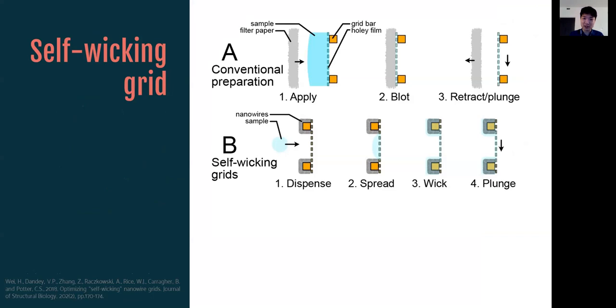So going back to the self-wicking grid. So the idea for a conventional grid, which I presented earlier, is that you have a filter paper. You press it against the excess liquid and it blots it away. And when you retract and plunge, you are left with a very thin film of liquid. For the self-wicking grids, what actually happens is that you can actually grow nanowires on the grid bars themselves, such that the grid has an innate capacity to absorb some liquid. So when you apply a sample onto the grid, this liquid is now sucked away by these nanowires and you get a very thin film. And that is the theory that is used right here in the Shake It Off and pioneered by Spotiton as well as Chameleon.